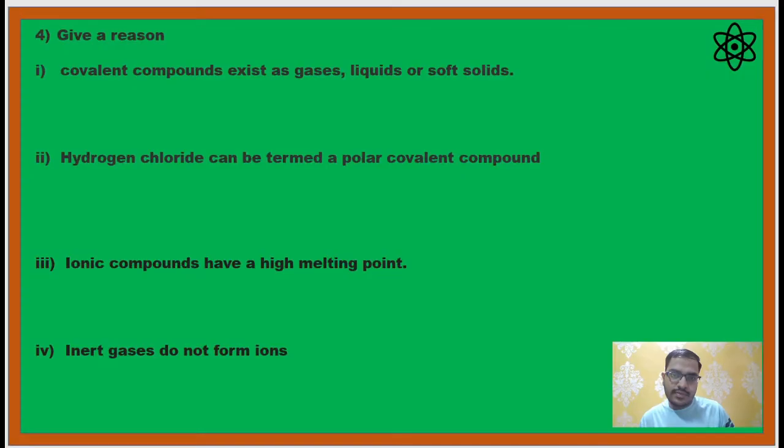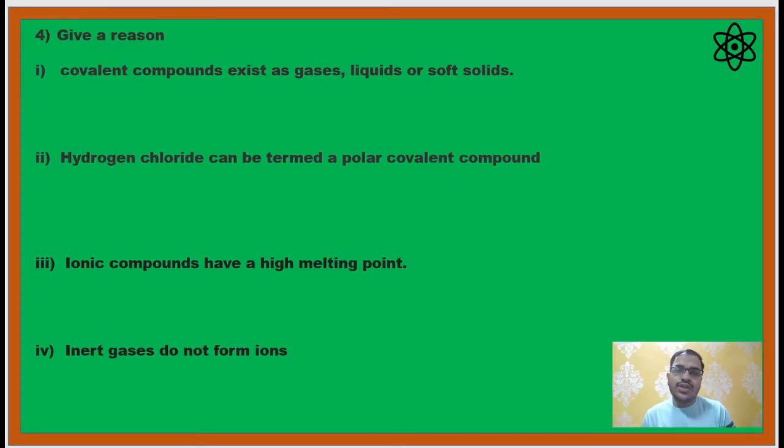Let's begin. The first question is 'Give a reason.' This question where you will be given a statement and you need to justify why the statement is correct. The first give reason given to you is that covalent compounds exist as gases or soft solids.